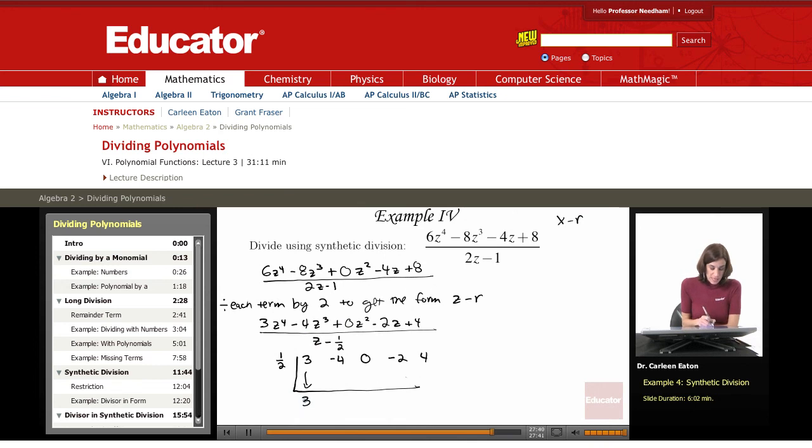Bring down the 3 and multiply 3 by 1 half. So 3 times 1 half is 3 halves. Now I have negative 4 and 3 halves. Negative 4 equals negative 8 halves. I want to get a common denominator. Adding that to 3 halves gives me negative 5 halves.